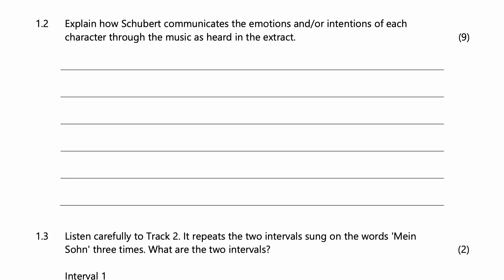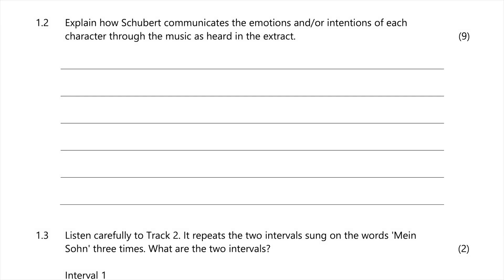Question 1.2 asks us to explain how Schubert communicates the emotions and/or intentions of each character through the music as heard in the extract. Make sure you are quite specific about naming your character. This question has two parts: what is the emotion or intention of each character, and how is that depicted through the music?